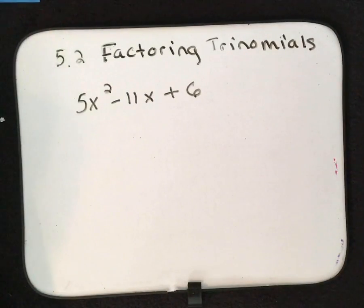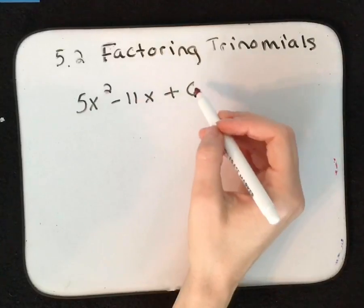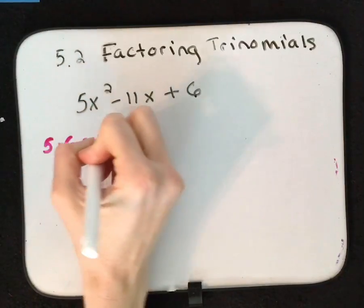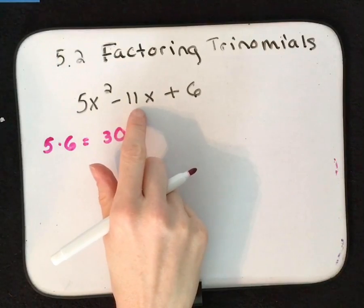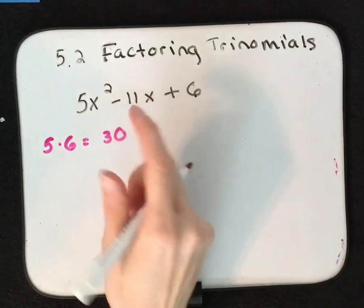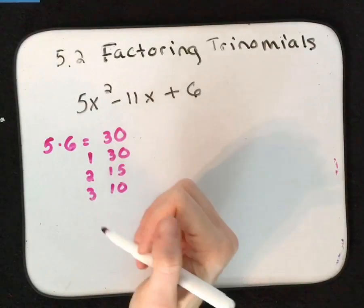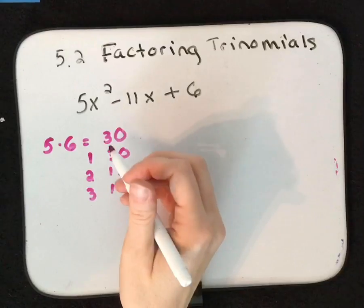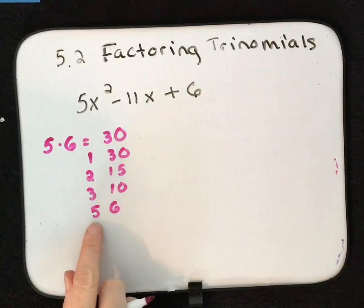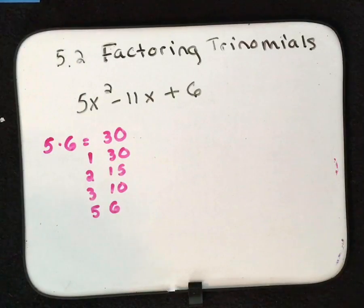We're going to use the AC method again. A is the coefficient of our highest power term and c is our constant, so a times c gives us 5 times 6, which equals 30. Notice here I have negative 11, so I need to consider factors of 30 that give me negative 11. Factors of 30: 1 and 30, 2 and 15, 3 and 10, 5 and 6. At 5 and 6 we've reached the turnaround point, so now I have all the factors of 30.